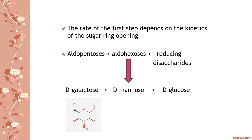The rate of the first step depends on the kinetics of sugar ring opening. Aldopentoses have a higher rate of reaction than aldohexoses and reducing disaccharides. Aldopentoses are reducing sugars with a five-membered ring, aldohexoses have a six-membered ring, and reducing disaccharides have two monosaccharide units. Among aldohexoses, D-galactose has a higher rate than D-mannose, and D-mannose has a higher rate than D-glucose.